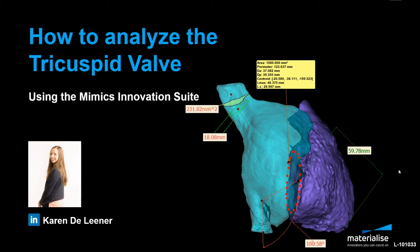The tricuspid valve is located on the right side of the heart, between the right atrium and ventricle. The most common disorder of this valve is tricuspid regurgitation, in which the valve does not completely close when the ventricle contracts. This allows blood to flow backwards from the right ventricle to the atrium, which can lead to higher blood pressure and even heart failure.